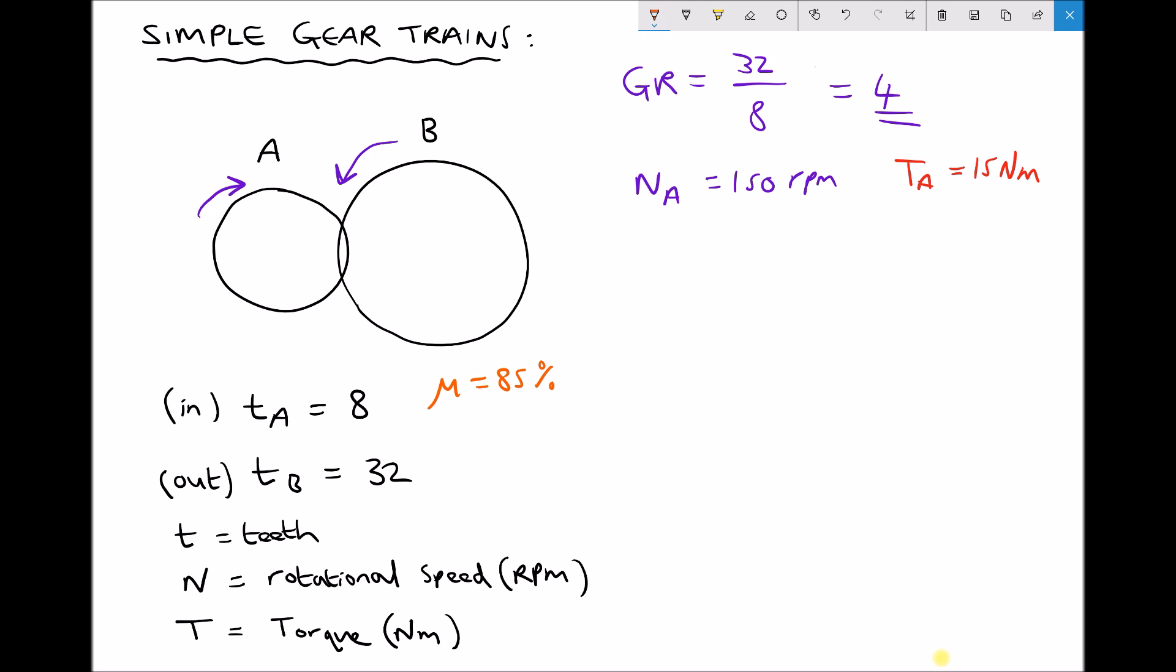Well first of all we can calculate the input power because we know the input speed and we know the input torque. Therefore the input power, P in, is going to be 2π NA TA over 60.